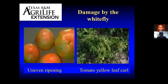The whiteflies themselves can damage tomatoes even without the virus. If you have an excessive amount of whiteflies, they can cause a physiological condition called uneven ripening — it's believed the saliva of the adult whitefly has some kind of toxin or protein that affects the plant physiologically, not allowing the tomatoes to ripen evenly. So you can have outright damage by high whitefly numbers, or you can have damage because they're transmitting the tomato yellow leaf curl virus.